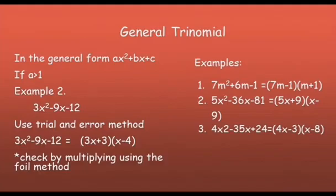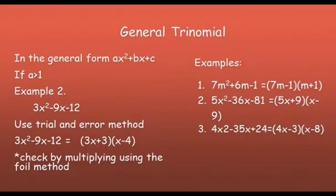In the general form ax squared plus bx plus c, if a is greater than 1, example: 3x squared minus 9x minus 12. The coefficient of x squared is 3, which is greater than 1. We may use a trial and error method to factor. 3x squared may be factored as 3x and x, because 3x times x is 3x squared. The factors of 12 are 3 and negative 4. To check using the FOIL method, multiply the first terms: 3x times x gives 3x squared.